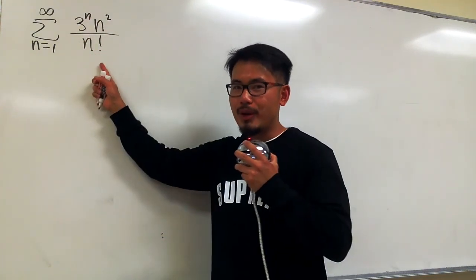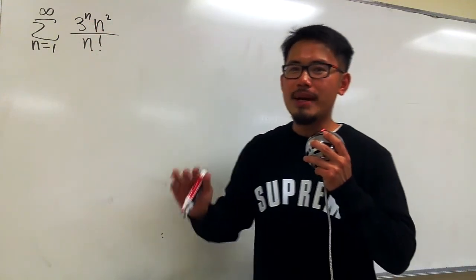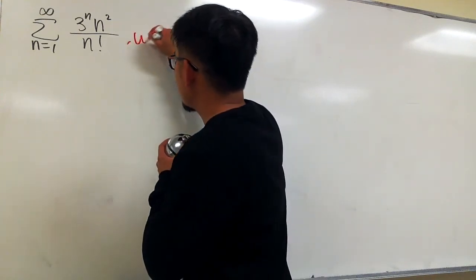We see we have the factorial and also that n is in the exponent, so we should definitely try the ratio test. We will use the ratio test.